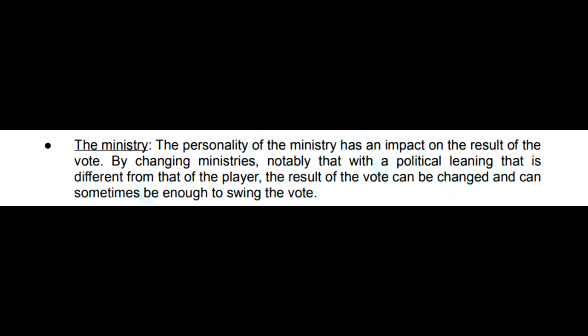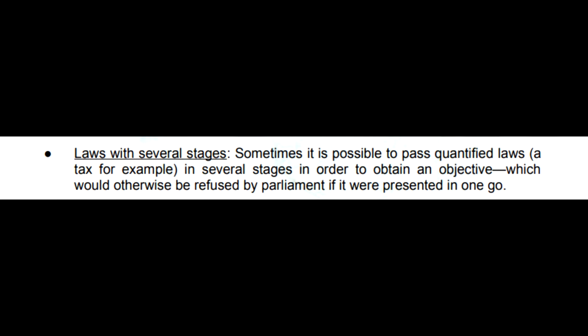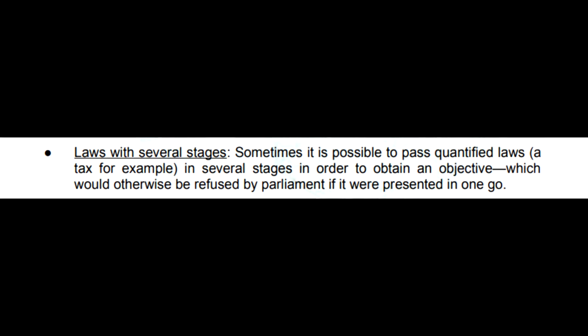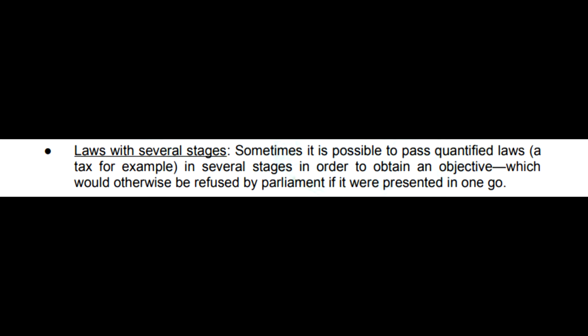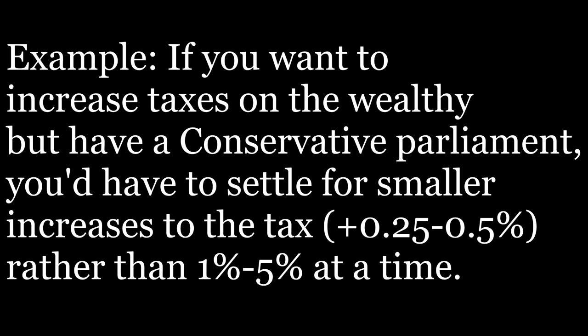The fifth one is the ministry. The personality of the minister has an impact on the result of the vote. By changing ministers or forming new governments, notably with a political leaning that is different from that of the player, the result of the vote can be changed and can sometimes be enough to swing the vote. And then the final one is laws with several stages. Sometimes it is possible to pass quantified laws, a tax for example, in several stages in order to obtain an objective which would otherwise be refused by parliament if it were presented in one go.